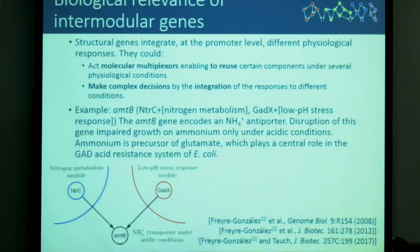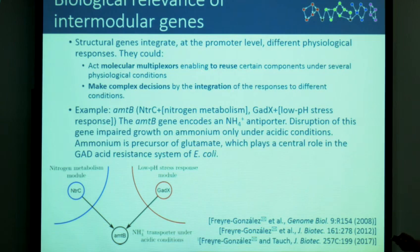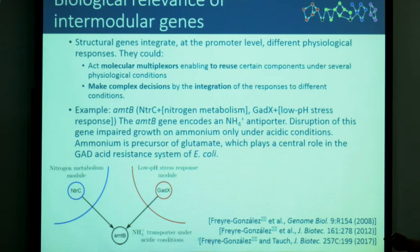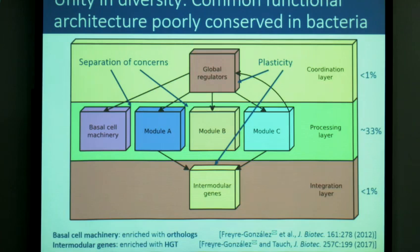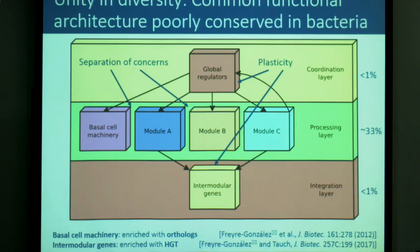The biological roles of intermodular genes include acting as a molecular multiplexer, enabling certain components to function under different conditions, or making complex decisions by integration of responses to different conditions. For example, AmtB is an ammonium antiporter working under acidic conditions, enabling introduction of ammonium — a precursor of glutamate — which is fundamental for acid resistance in E. coli. This is an abstraction of the functional hierarchy found by the Natural Decomposition Approach: a coordination layer by global regulators, a processing layer by modules and basal machinery, and an integration layer. The major conservation is in the processing layer, while the other two layers are the most plastic. Basal machinery is enriched with orthologs, and intermodular genes are enriched with horizontal gene transfer.